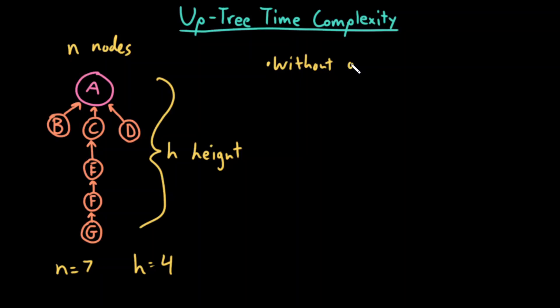Without any optimizations, this would be big O of n in the worst case. I would have a single sentinel node with a long chain of a bunch of descendants, and if I did find on the bottom one I would have to traverse big O of n edges to reach my sentinel node.